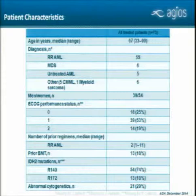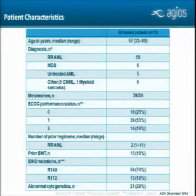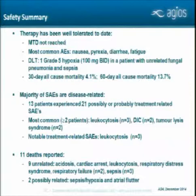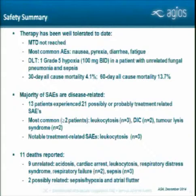Patient characteristics: average age is 67, the majority are relapsed/refractory AML or MDS, with approximately equal numbers of men and women and good ECOG performance status. The average number of prior regimens for relapsed/refractory patients is two, and some patients have had prior bone marrow transplants. Safety summary to date: this therapy has been well-tolerated. We have not reached the MTD. The most common adverse events include nausea, anorexia, diarrhea, and fatigue. The majority of serious adverse events are disease-related—most associated with sepsis or differentiation syndrome. There have been 11 deaths reported, nine unrelated, and two possibly related including sepsis and atrial flutter.